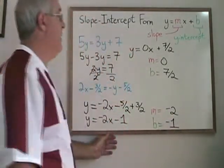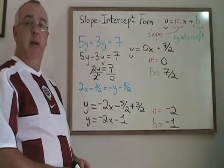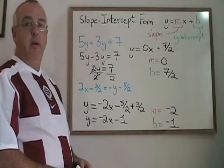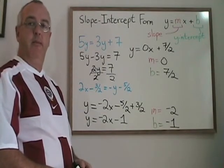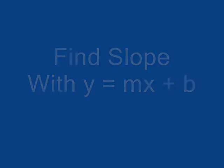This is how we use slope-intercept form, or y equals mx plus b, to find the slope and y-intercept of straight line equations. Thank you.